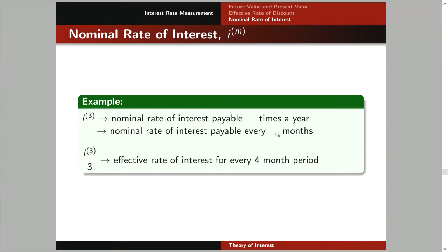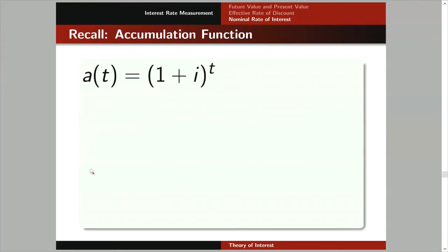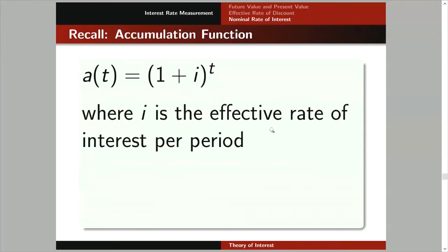To get the effective rate of interest for every 4-month period, we need to divide I upper 3 by 3. Now, I want you to recall the accumulation function, which looks like this: A of t equals 1 plus I raised to T, where I is the effective rate of interest per period.